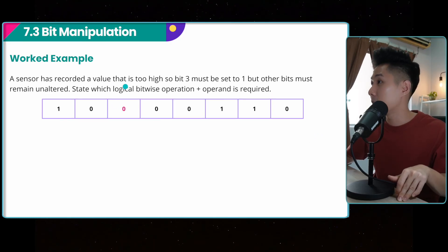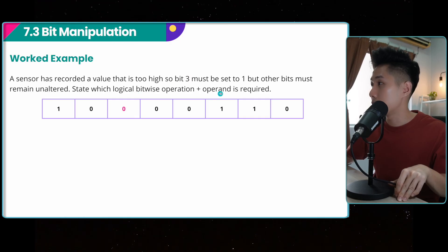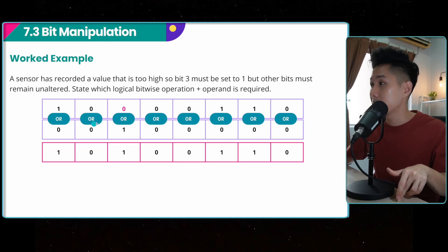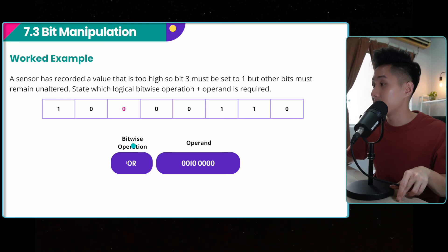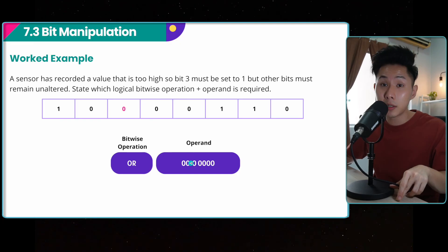Second example, a sensor has recorded a value that's too high. So bit number three here must be set to one, but other bits must remain unaltered. State which logical bitwise operation plus operand is required. So I only want to change this. I want to make everything unchanged. To do that, like what we learned just now, we use an OR operator to change this from zero to one. And because I'm putting an OR operator with operand zero for the other bits, they will not get affected at all. So the operation I choose is OR and the operand I choose is one at the third bit position because I'm changing the third bit.